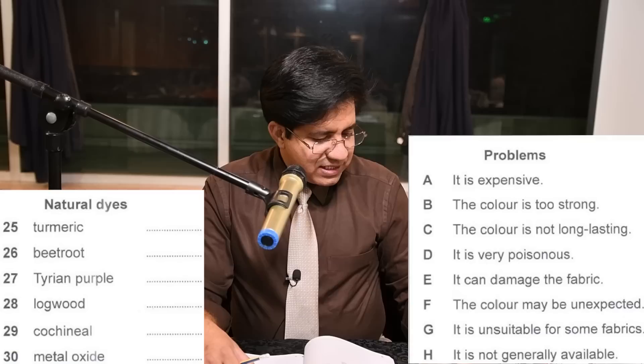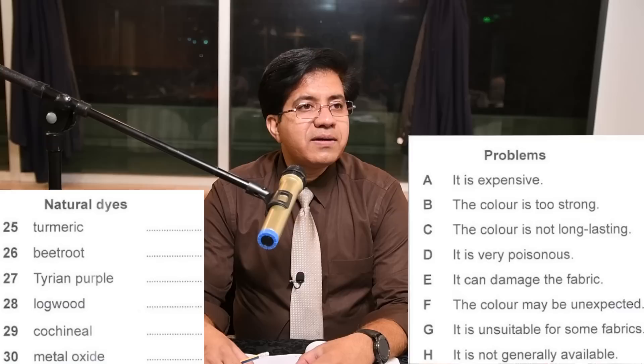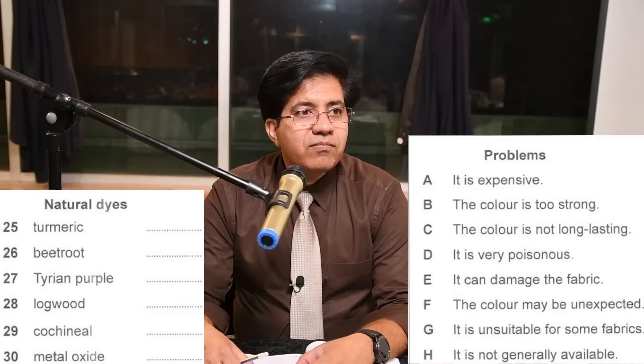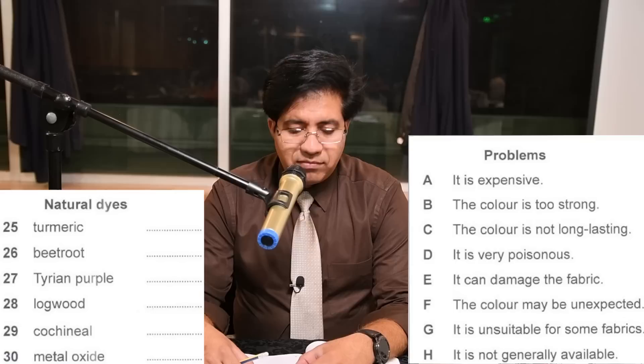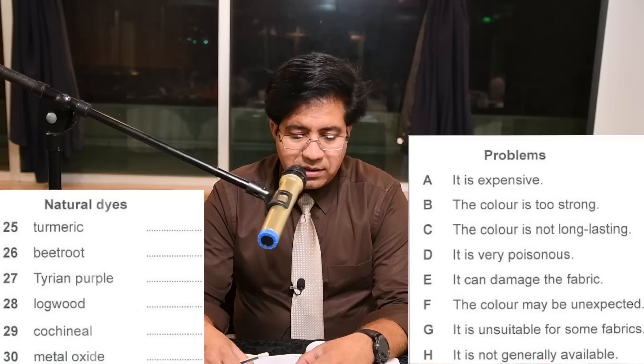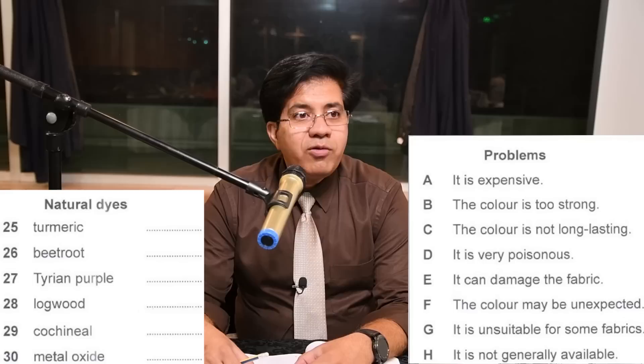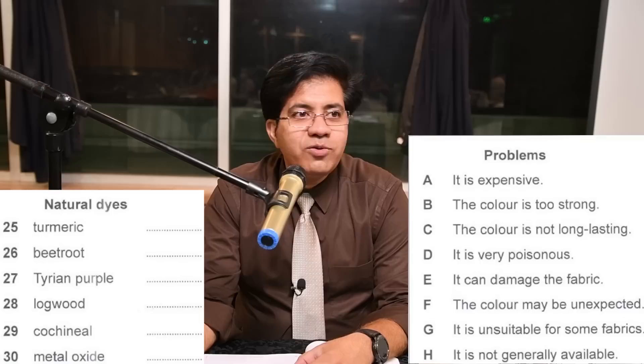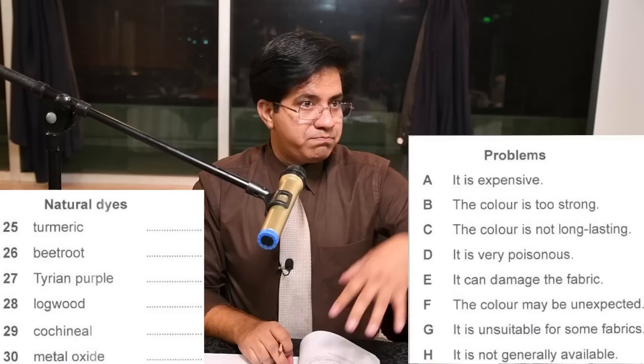Question 29: cochineal — an insect-based dye. 'I didn't actually make it myself; I got the dye from a website, but it cost a fortune. I can see why it's generally just used in cooking and in small quantities — it's very effective but that's precisely why it's not used as a dye.' It cost a fortune — the answer is A: it is expensive.